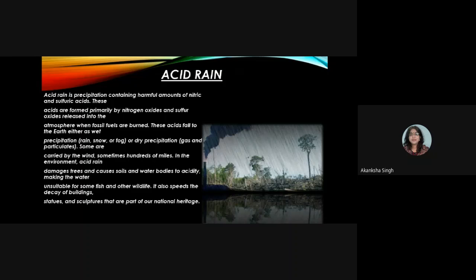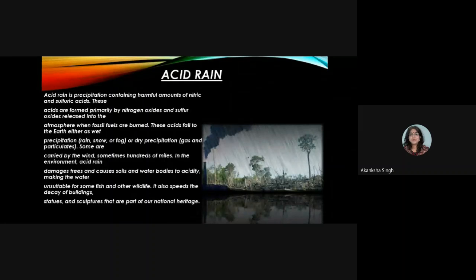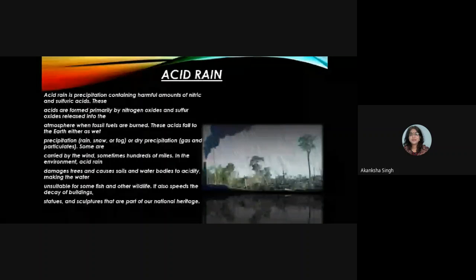Acid rain can be carried by the wind hundreds of miles. In the environment, acid rain damages trees and causes soils and water bodies to acidify, making the water unsuitable for some fish and other wildlife. It also speeds the decay of buildings, statues, and sculptures that are part of national heritage.